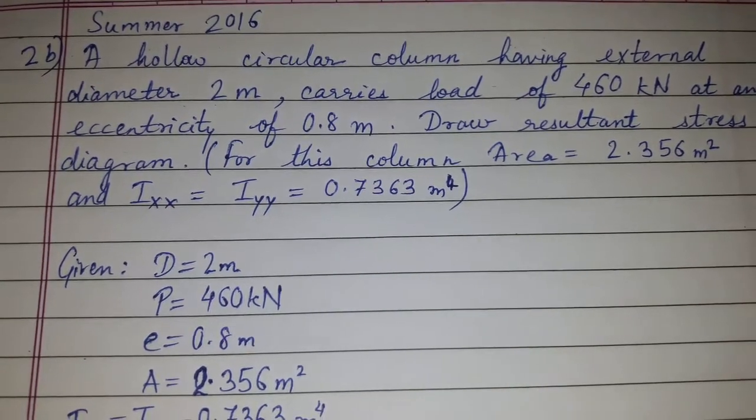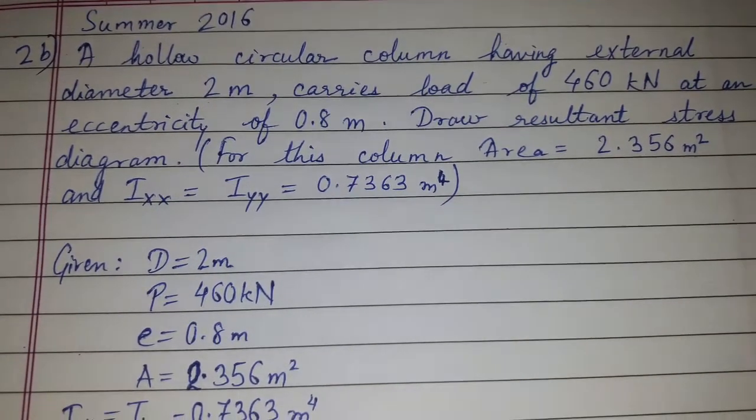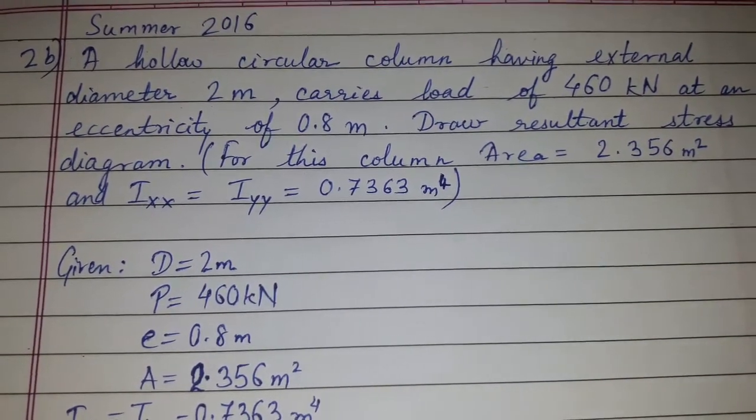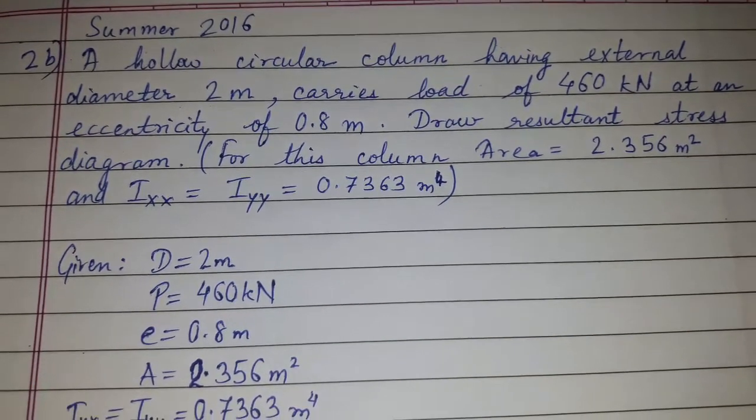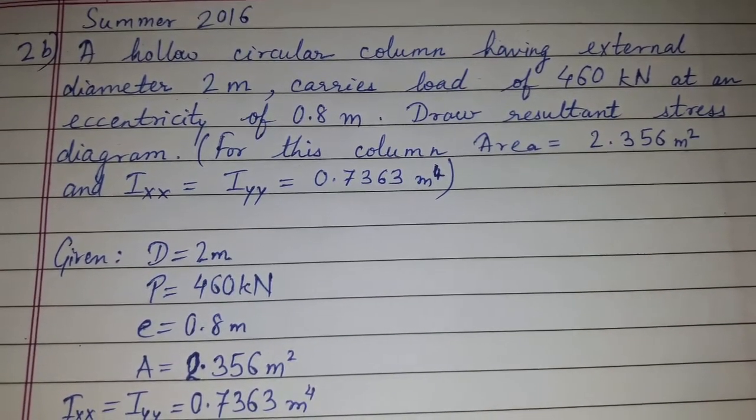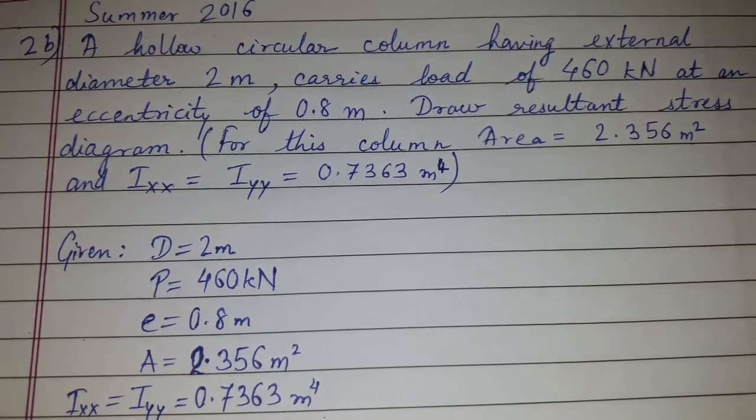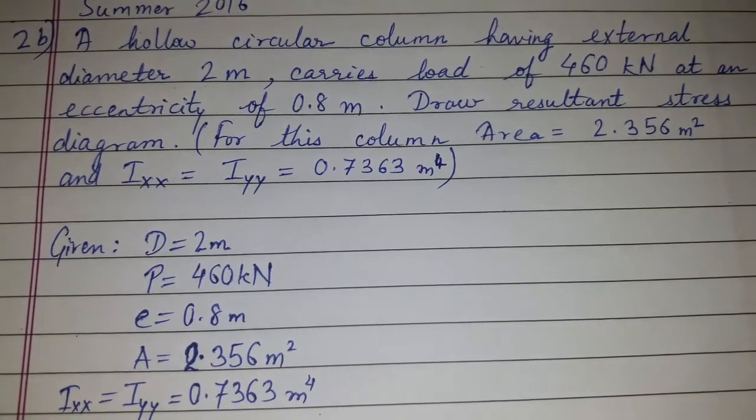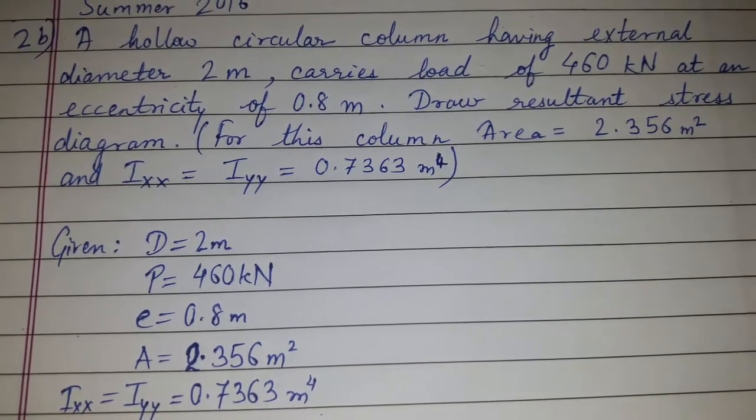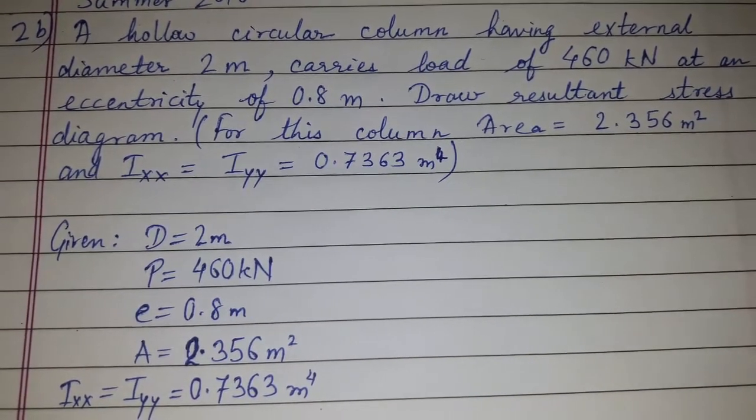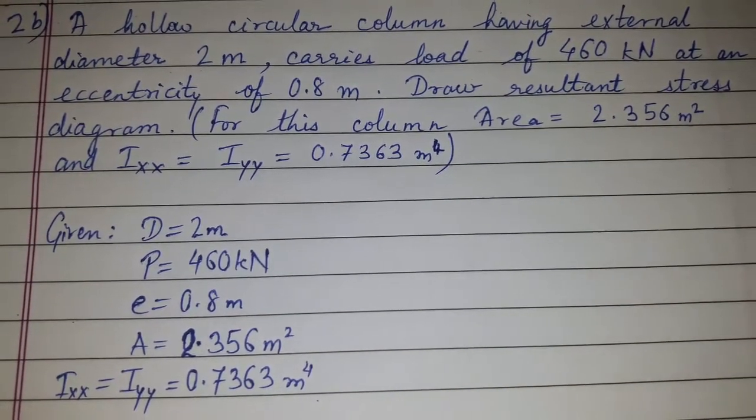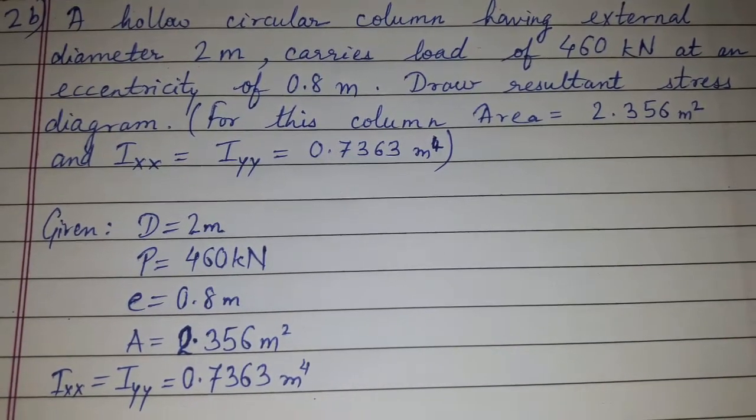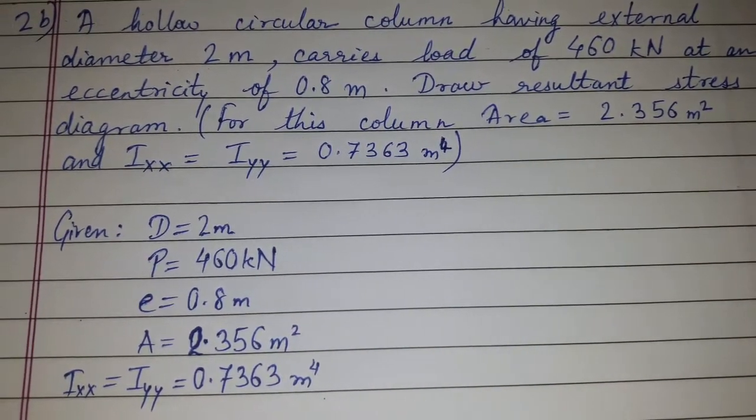A hollow circular column having external diameter 2 m carries load of 460 kN at an eccentricity of 0.8 m. Draw resultant stress diagram. For this column, area is equal to 2.356 m² and Ixx is equal to Iyy is equal to 0.7363 m⁴.